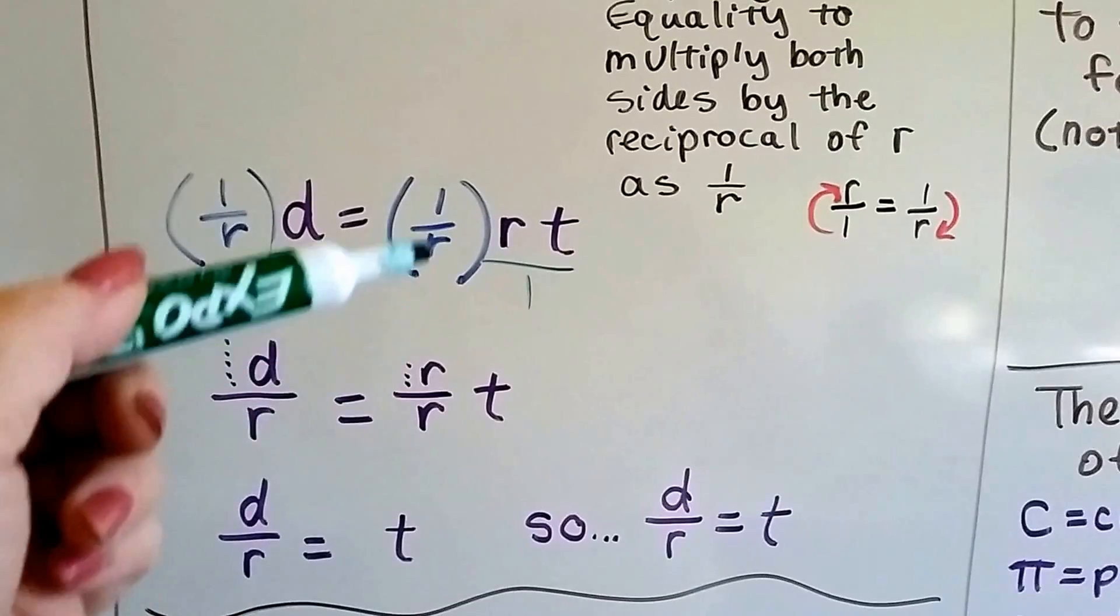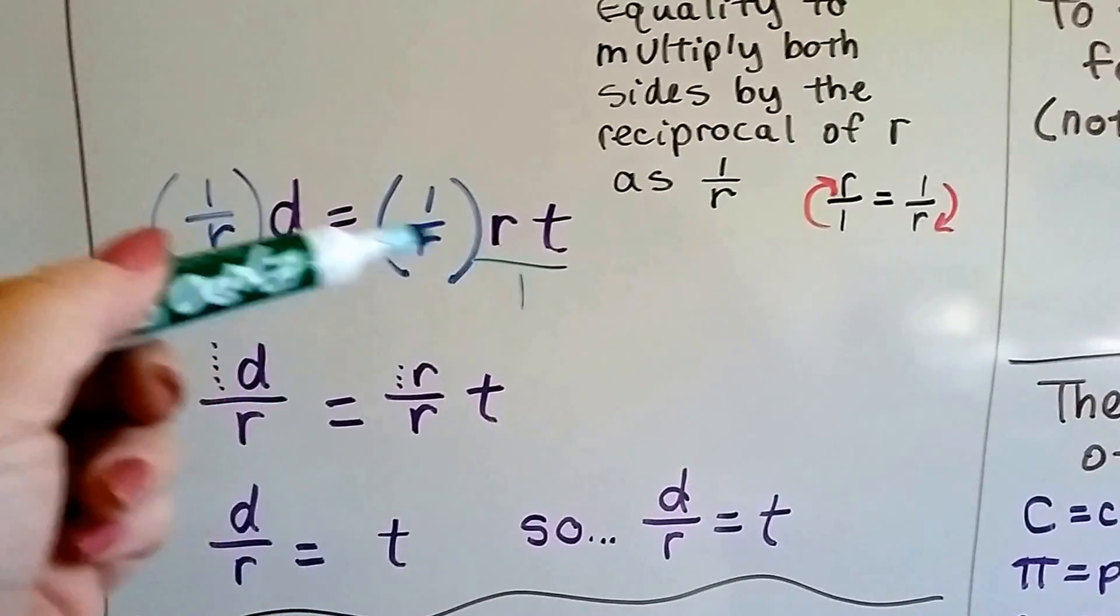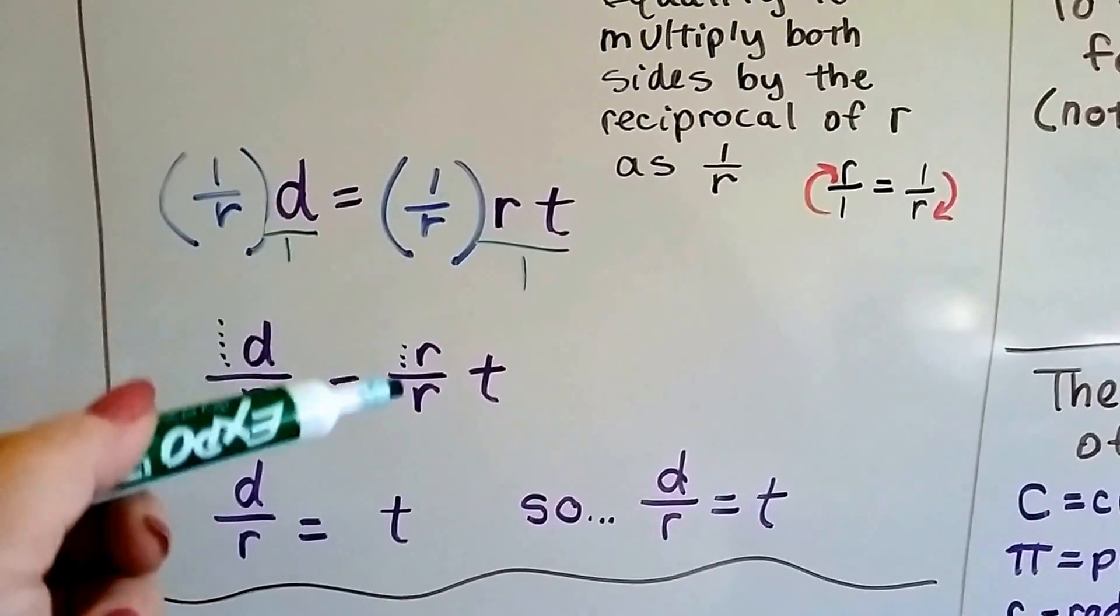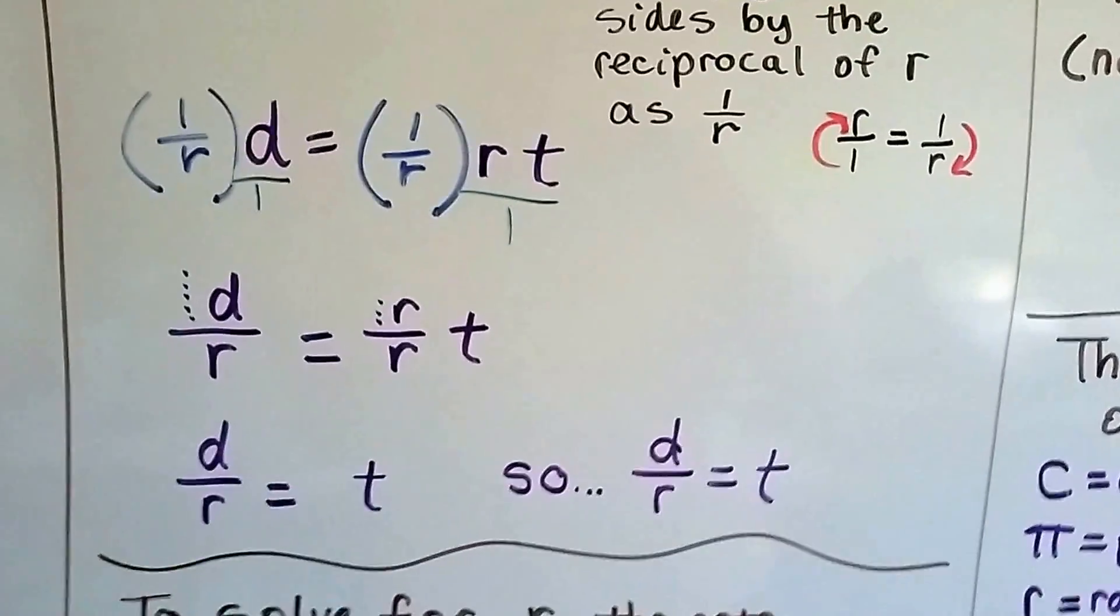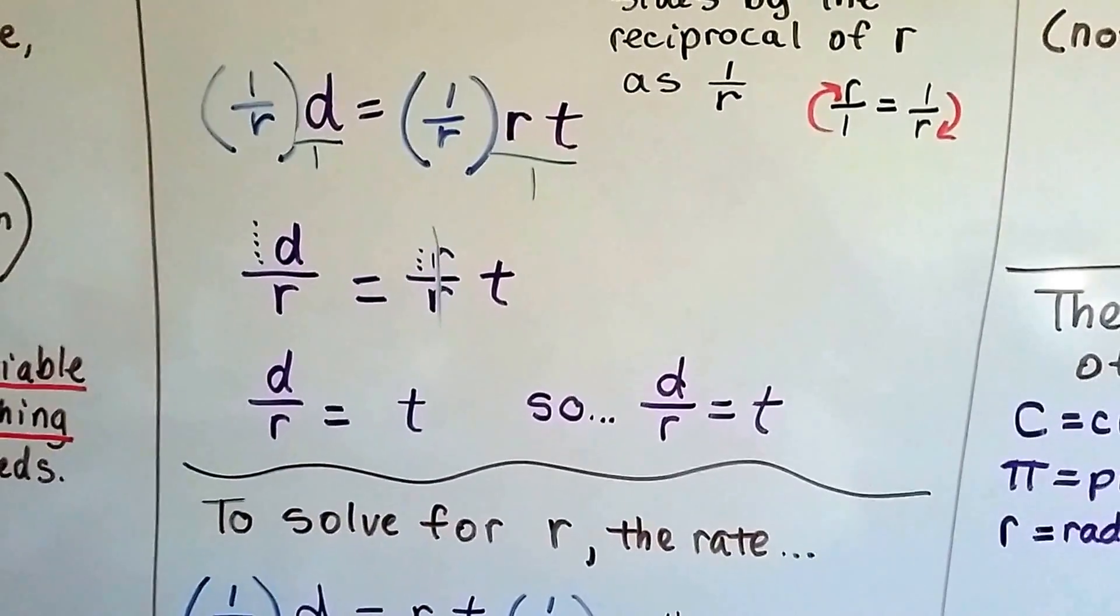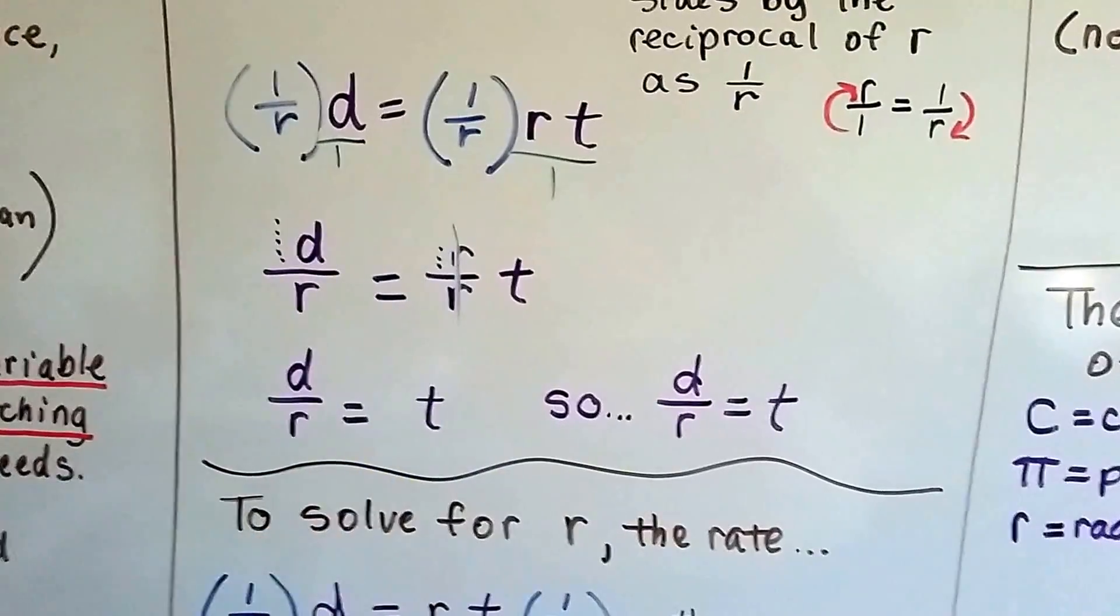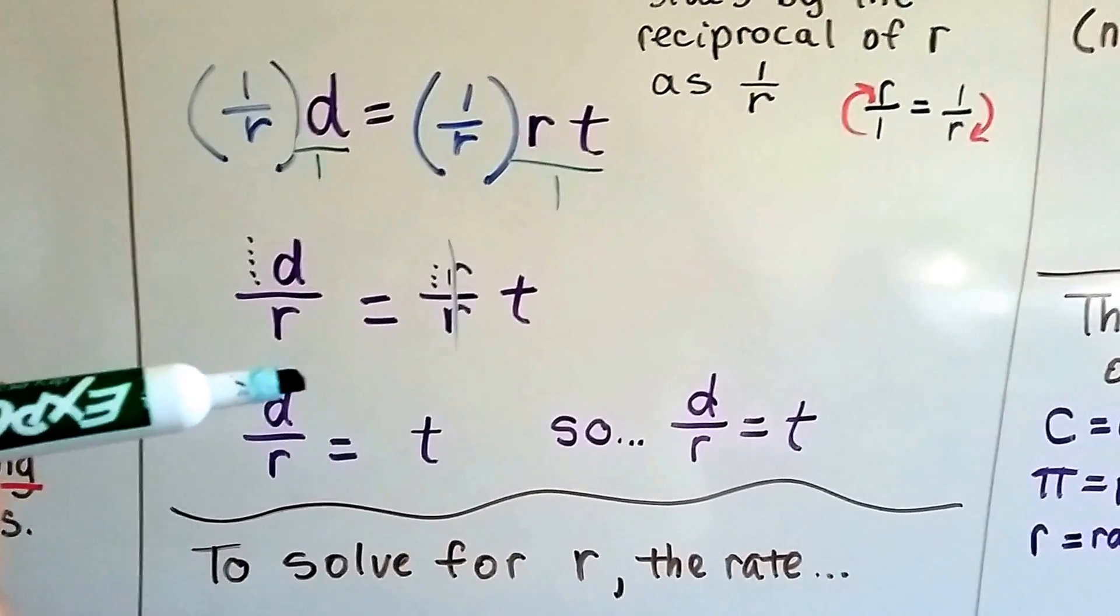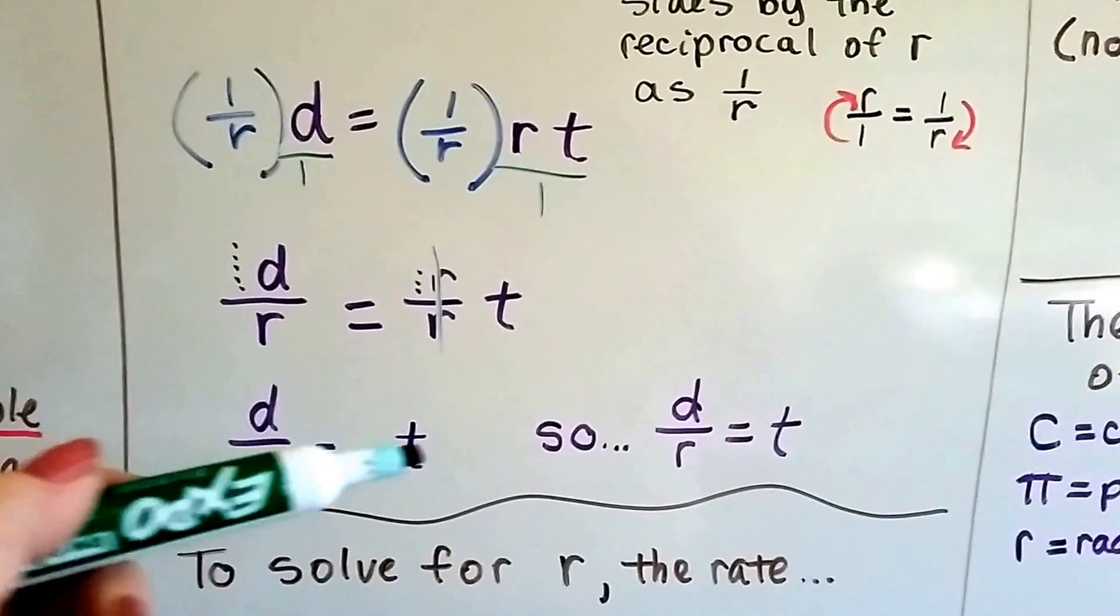And because we've got an r, a 1r over an r1 here, that created the identity property, our invisible 1, as an r over an r. And we don't write that 1, do we? That's just a 1. It's 1t. 1 times t is t.